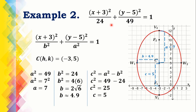Example number 2: The square of the quantity x plus 3 over 24 plus the square of the quantity y minus 5 over 49 equals 1. The given equation is an ellipse with center at (h, k). Observe the denominators: 49 is greater than 24, and 49 is the denominator of the quantity with variable y. Then the major axis is a vertical line and the ellipse is a vertical ellipse — its graph is sketched vertically. The center is (−3, 5).